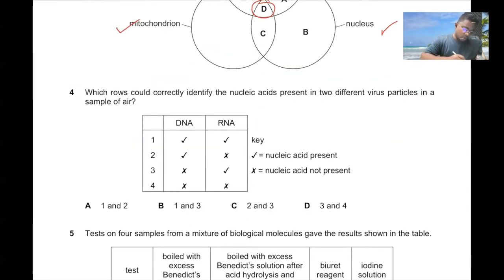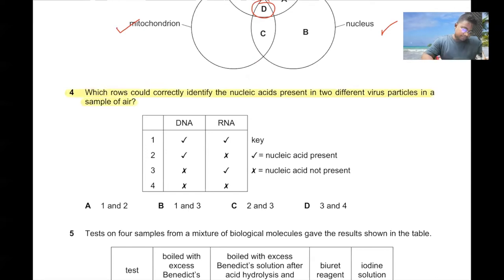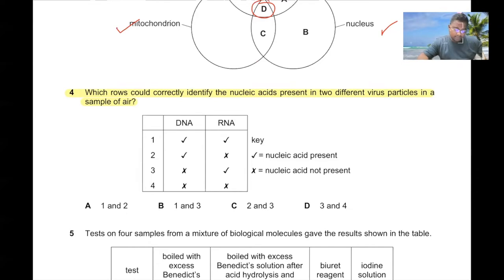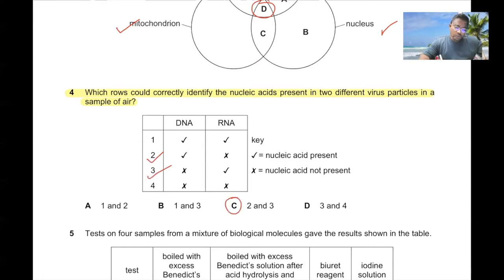Question number four. Which row could correctly identify the nucleic acid present in two different virus particles in a sample of air? A virus particle can either have DNA or RNA as its nucleic acid. So the answer is C, with options 2 and 3 correct.